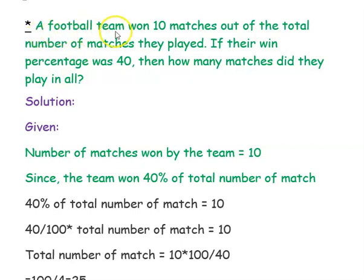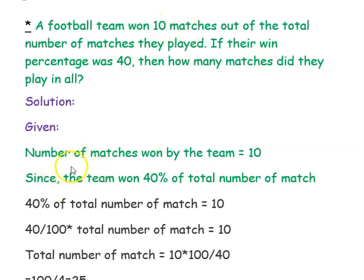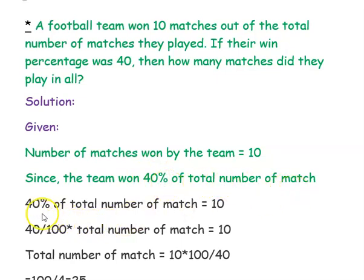The next example: a football team won 10 matches out of the total number of matches they played. If their win percentage was 40, then how many matches did they play in all? What is given — the number of matches won by the team is 10, and their win percentage is 40. So the team won 40 percentage of the total number of matches. We can write: 40 percentage of total matches won equals 10.